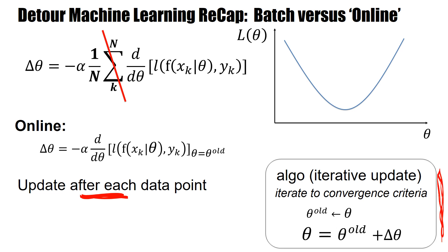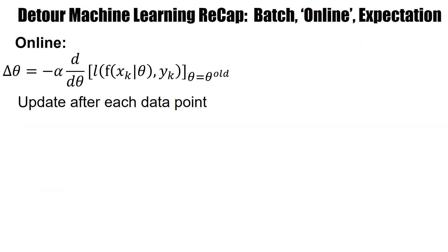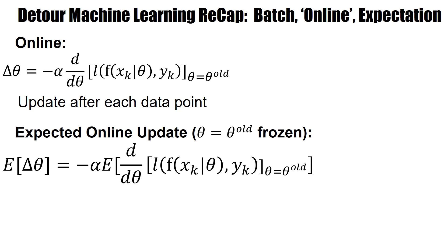Online means I take one data point at a time, so the sum disappears and I update after each data point. The update formula looks the same, but the update happens after each single data point. I go down the loss landscape, start somewhere, go down, might overshoot, go back, approach the minimum — but then because it's an online update rule, I just continue forever. I will not end up at the minimum once and for all; instead, it jitters forever.